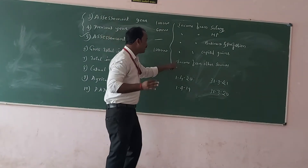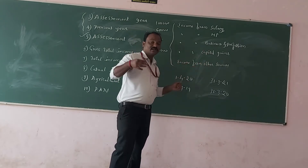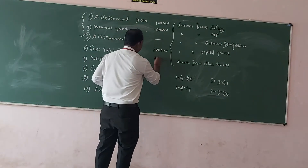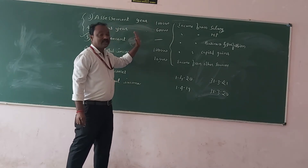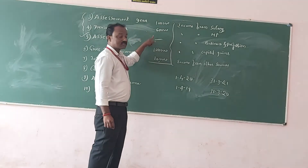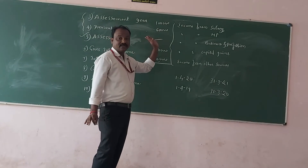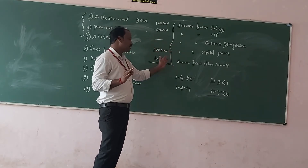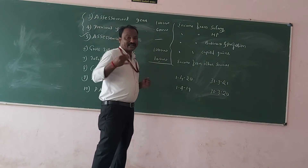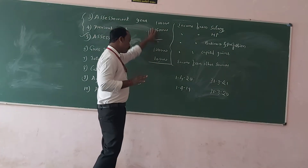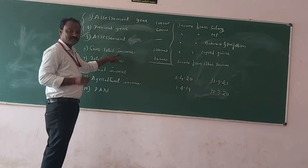Next is income from other sources — income which is not from salary, house property, business and profession, or capital gains is called income from other sources. For example, he has earned interest by depositing money. From these four sources, the total income calculated as per the particular mechanism for each head is called as gross total income. For example, 2,70,000 — this is called as gross total income.